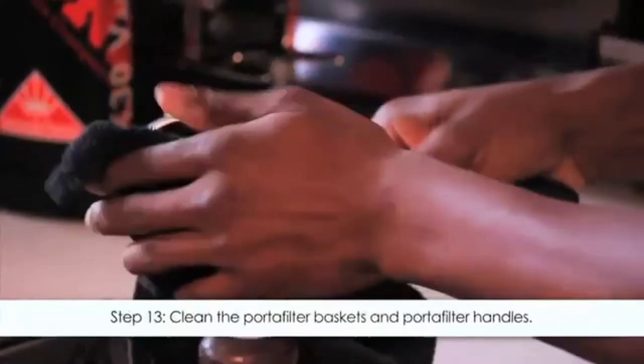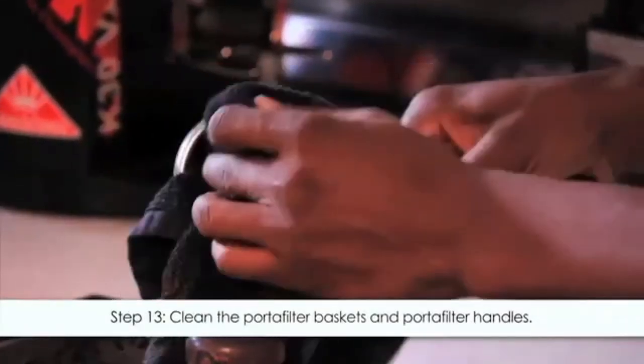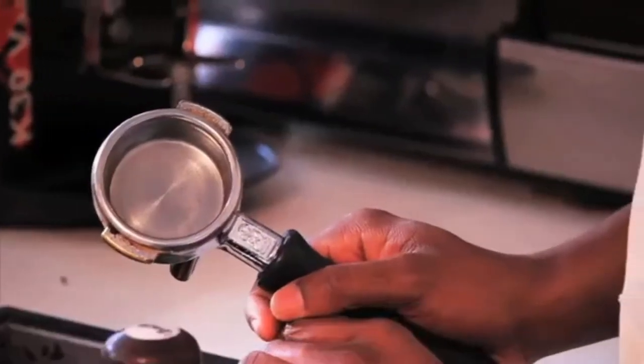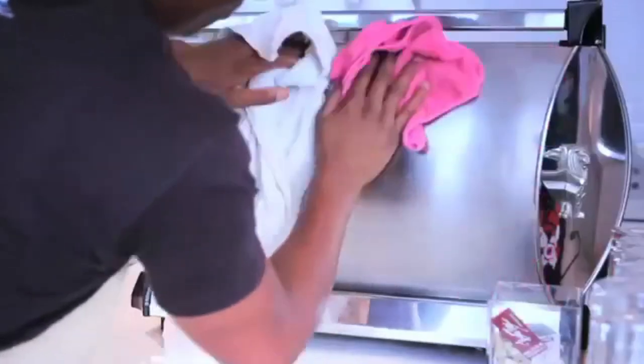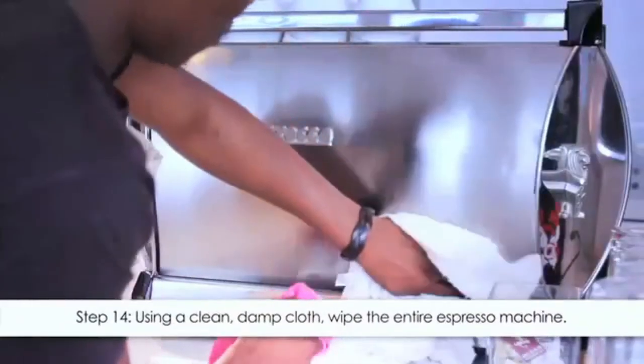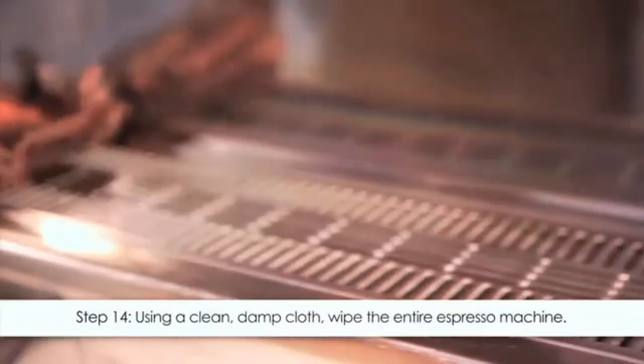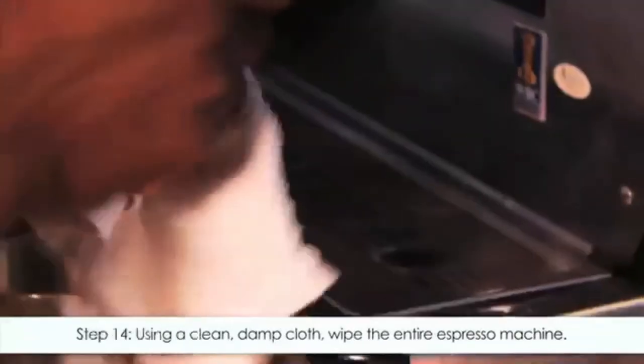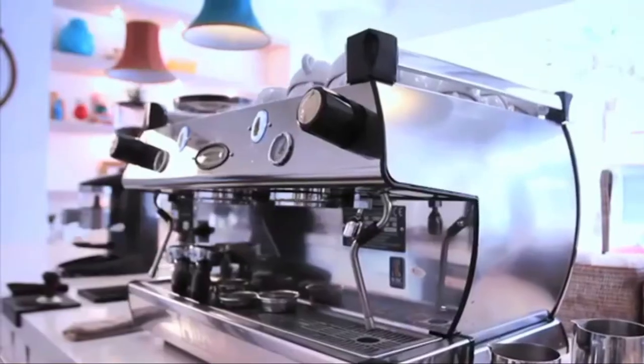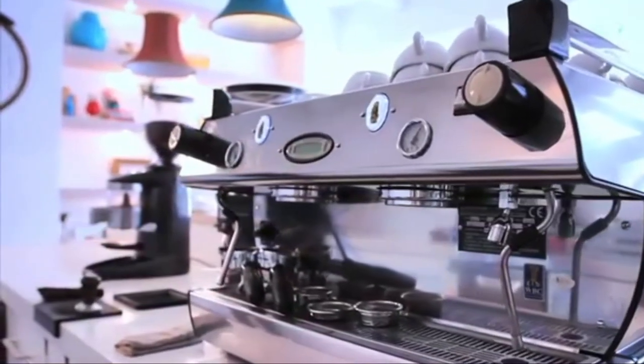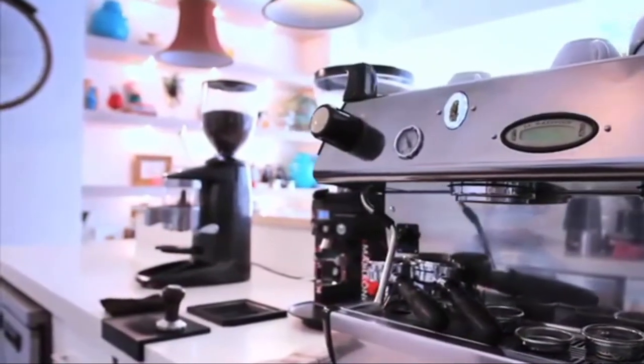Step 13: use the appropriate coffee tools to clean the portafilter baskets and portafilter handles. A good idea would be to soak your baskets and portafilter handles in an appropriate cleaning solution. Step 14: using a clean damp cloth, wipe the sides, the top, the drip tray, the bottom drip trays, and the panels of the espresso machine. Now your machine is spotless and you can rest assured that the coffees you are producing come from a perfectly clean and working machine.